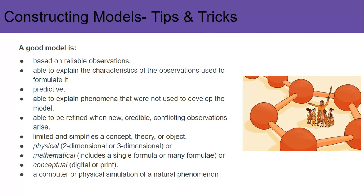Just a few tips and tricks to think about when you're constructing models. I've got here a list of dot points about what makes a good model. They're based on reliable observations, and they're able to explain the characteristics of these observations that were used to formulate them. They are predictive, and they're able to explain phenomena that were not used to develop the model. They're able to be refined when new, credible, and conflicting observations arise, and they're limited and simplify a concept, theory, or object.